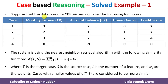In this case, we have been given a database of a CBR system containing four cases. Each of these four cases contains three attributes. The first one is monthly income, the second one is account balance, and the third one is homeowner. The credit score is the target variable. Given this dataset, we need to use the nearest neighbor retrieval algorithm to find the similar example. The similarity function is also given to us.